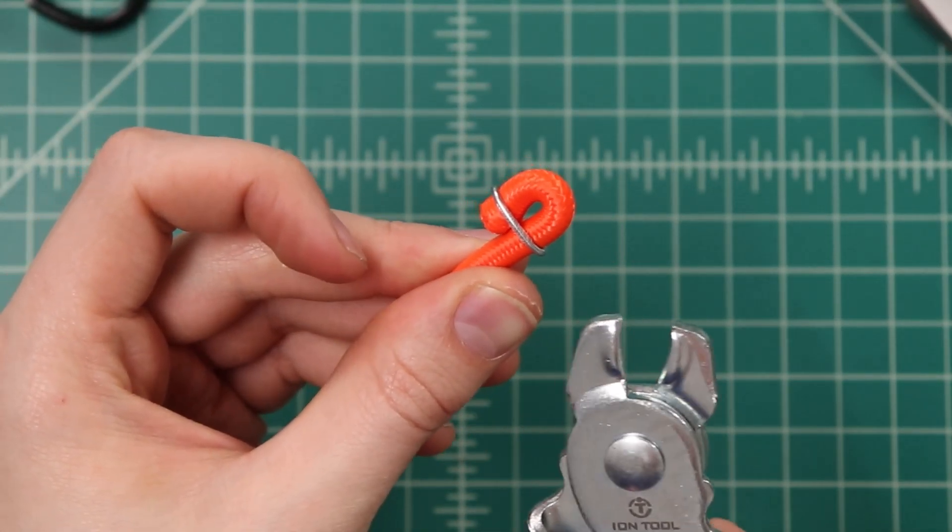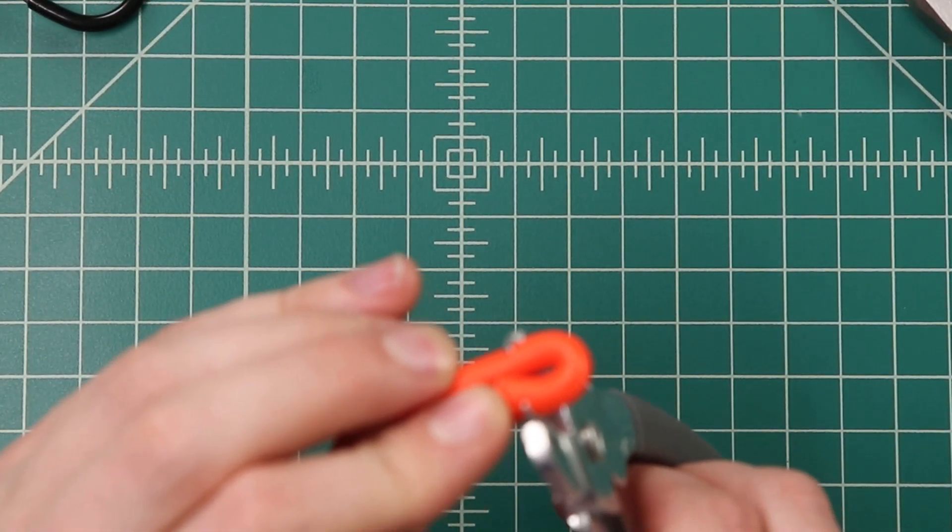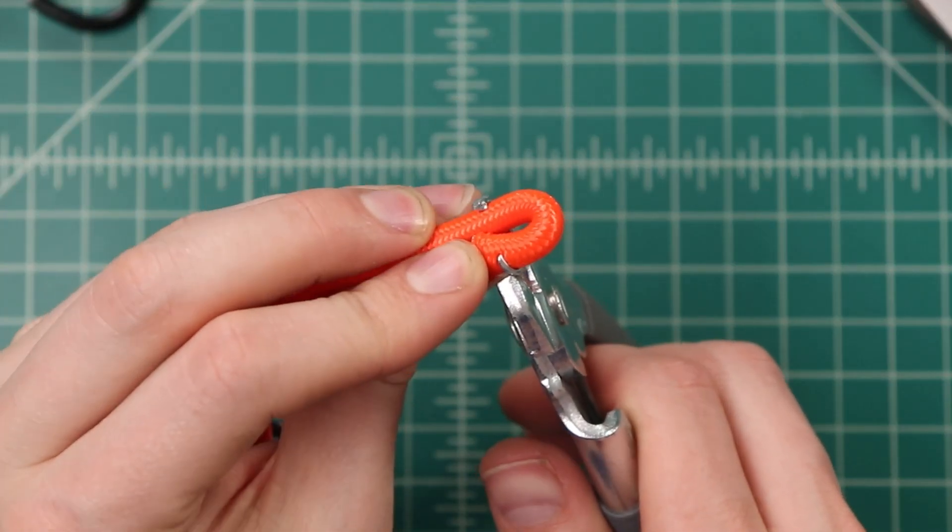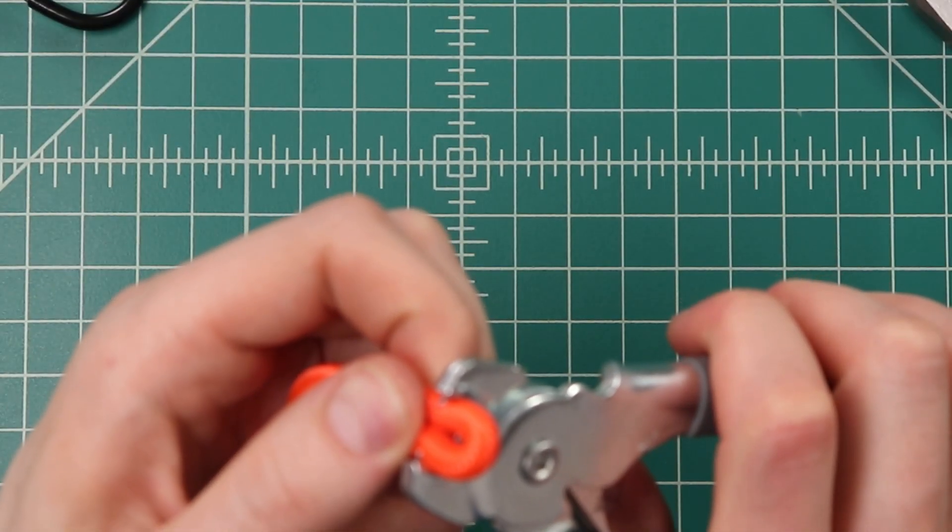Then we'll take those hog ring pliers, and facing the staple away from the pliers, we'll just set it right in those grooves and clamp it down.